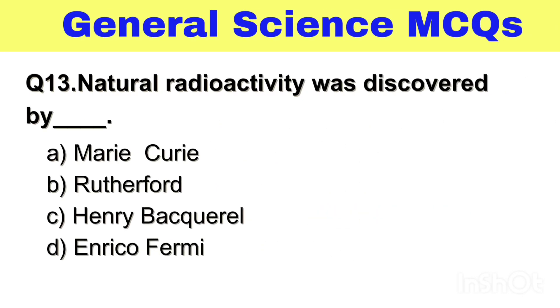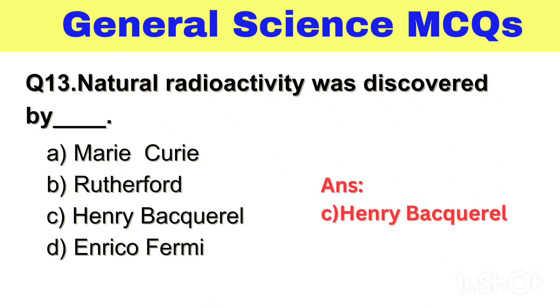Question No. 13. Natural radioactivity was discovered by — Option A. Marie Curie, B. Rutherford, C. Henri Becquerel, D. Enrico Fermi. The right answer, Option C. Henri Becquerel.